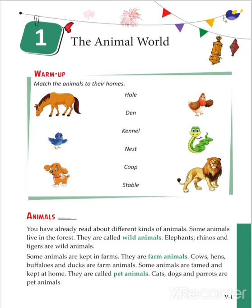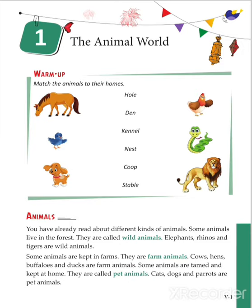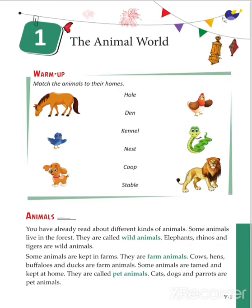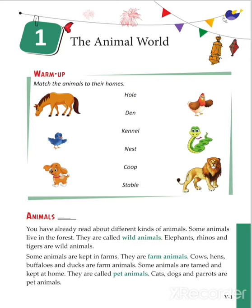Some animals live in the forest — they are called wild animals. Examples are elephants, rhinos, and tigers. Some animals are kept on a farm — they are called farm animals. Cows, hens, buffaloes, and ducks are farm animals. These are kept on the farm as they help the farmer in his work.